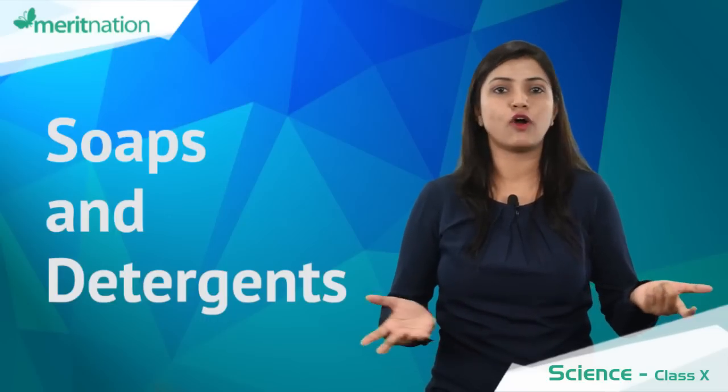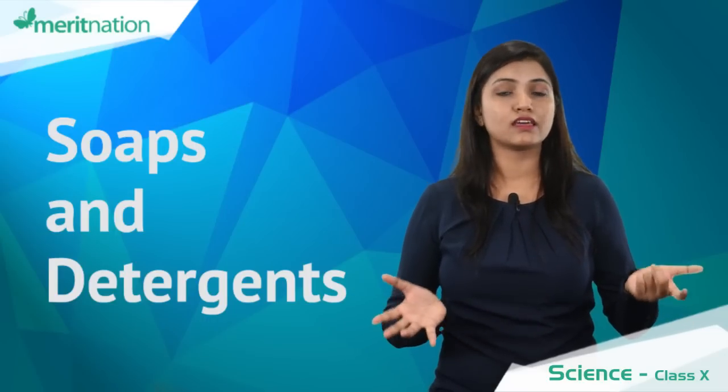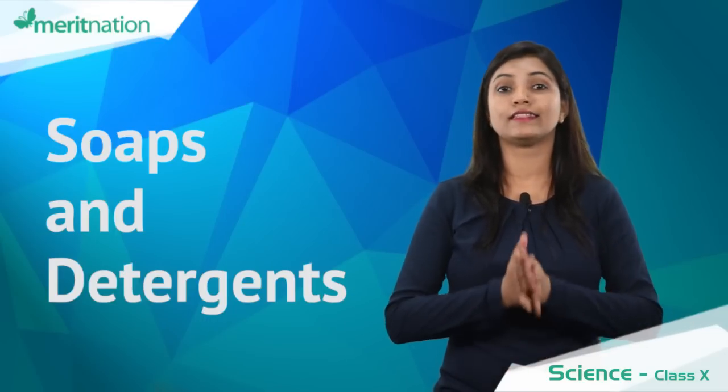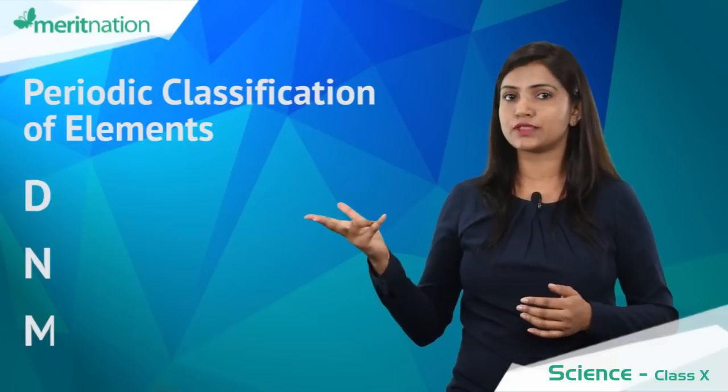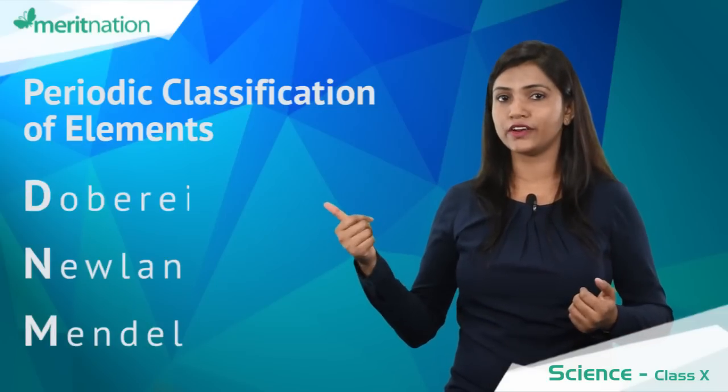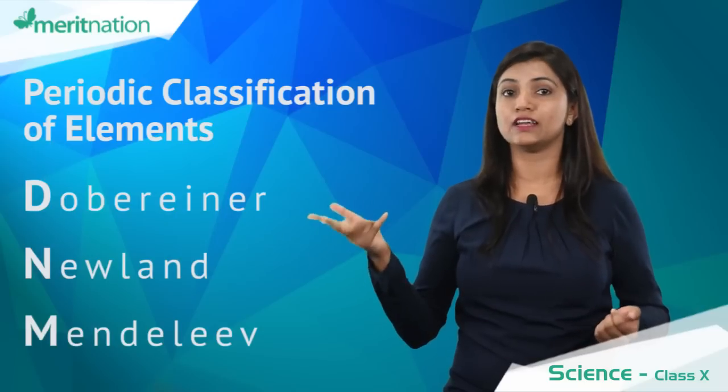The next chapter we have with us is the periodic classification of elements. We know the DNMs are important - yes, the Dobreiner, the Newlands, and the Mendeleev periodic table.